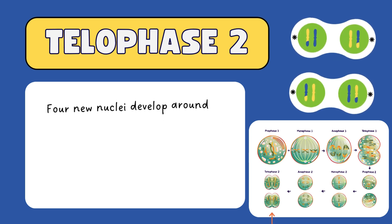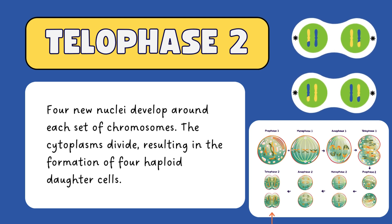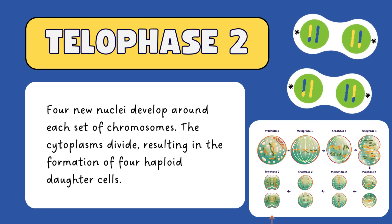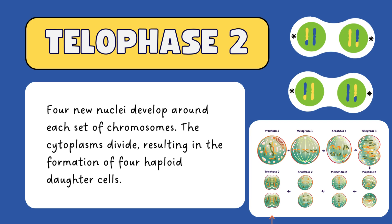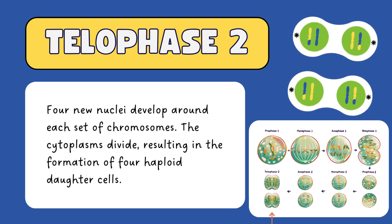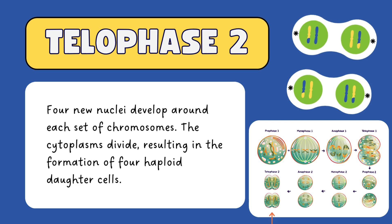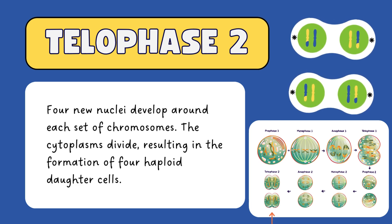In telophase II, four new nuclei develop around each set of chromosomes. The cytoplasms divide once again, resulting in the formation of four haploid daughter cells. This completes the process of meiosis.